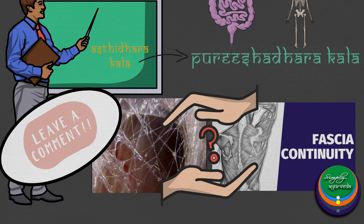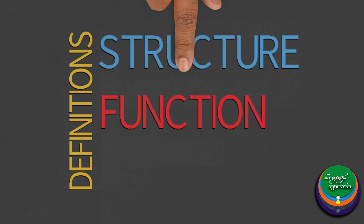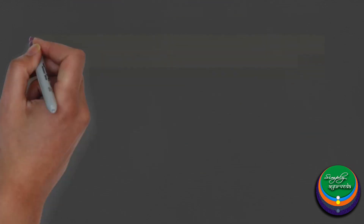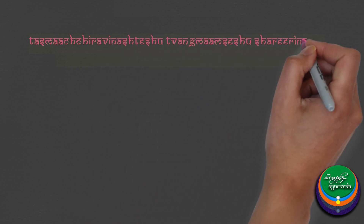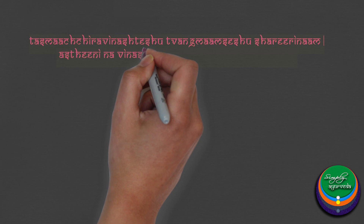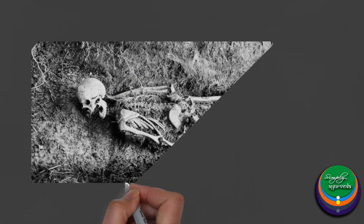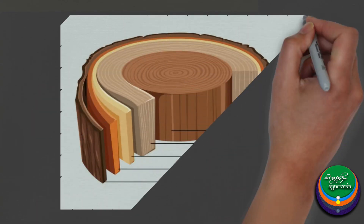Let us now look into the definitions of Asthi. Asthi is that which continues to exist even after the decay of muscles and other soft tissues. It supports the body like the hardwood of a tree.